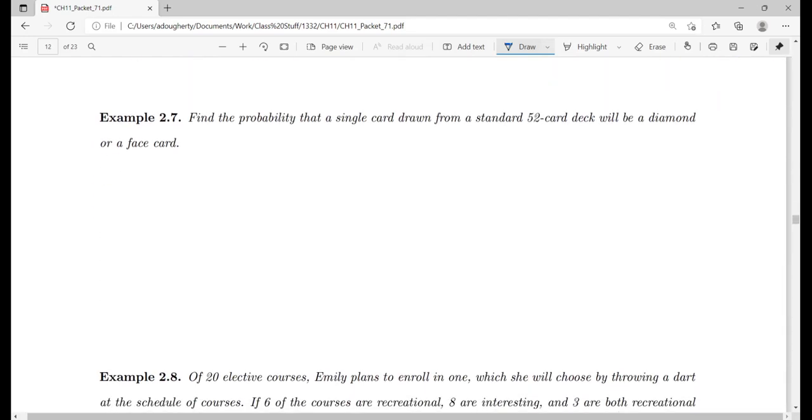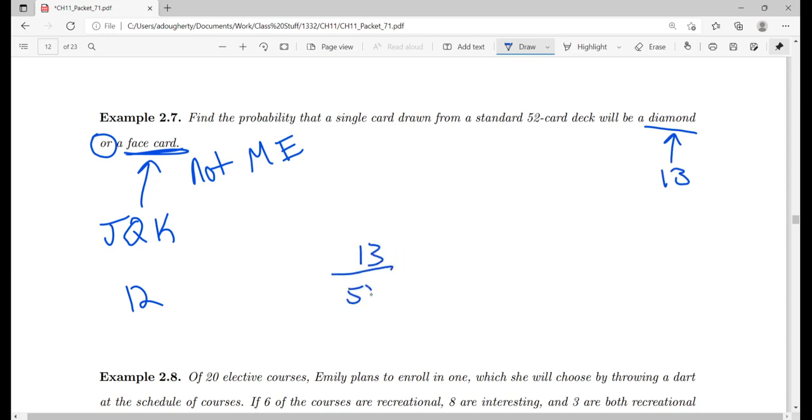Let's see another example here. Probability that a single card is drawn from a deck will be a diamond or a face card. These are not mutually exclusive events. Your face cards are your queen, your king, and your jack. So there are 12 face cards total, because you have a jack, queen, king of hearts, a jack, queen, king of diamonds, a jack, queen, king of clubs, a jack, queen, king of spades. Your diamonds, there are 13 of them. So our starting point is going to be to add these two together.